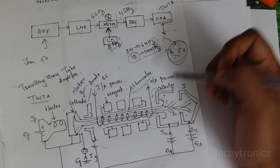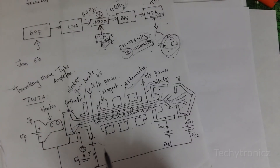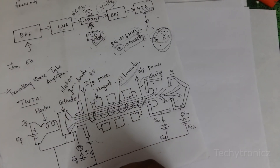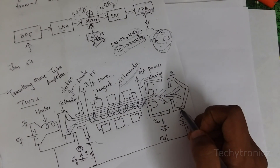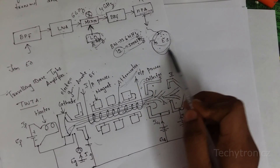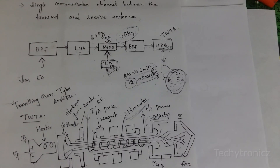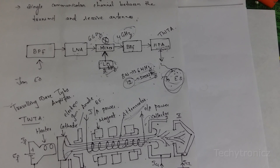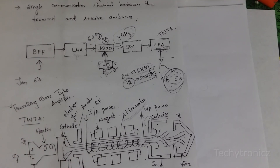The traveling wave tube amplifier can amplify over a wide bandwidth. It is used to strengthen the signal and give it to the receiver side of the earth station. That is all about the transponders and the amplifier used in the transponder, that is the traveling wave tube amplifier.